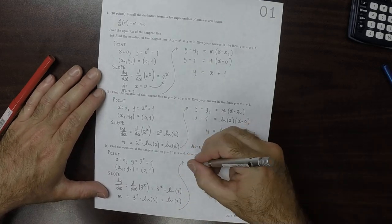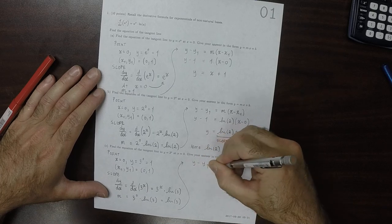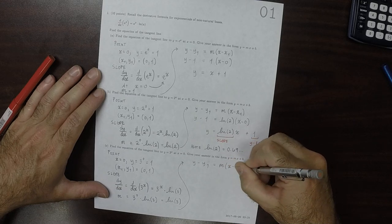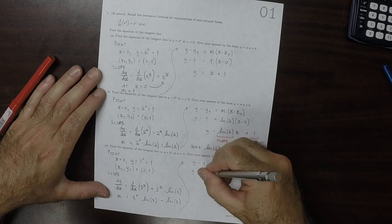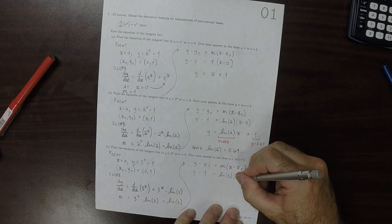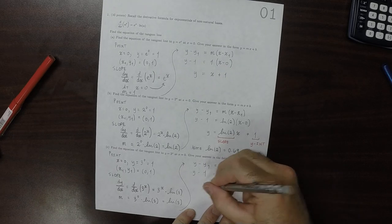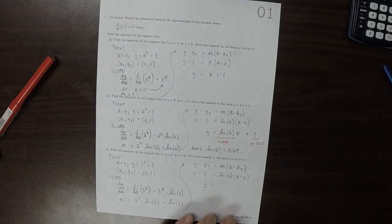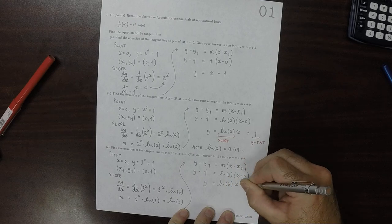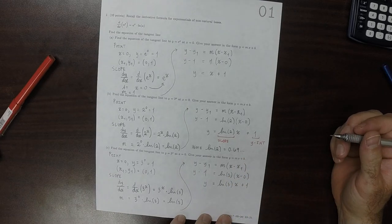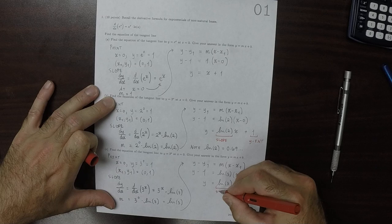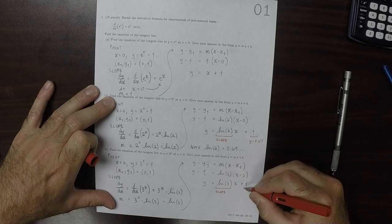And you plug this in. y minus y1 is m multiplied by x minus x1. So y minus 1 is the logarithm of 3 multiplied by x minus 0. And then solving, y is the logarithm of 3 times x and then plus 1. Well, again, this is the slope. And this is the y-intercept.